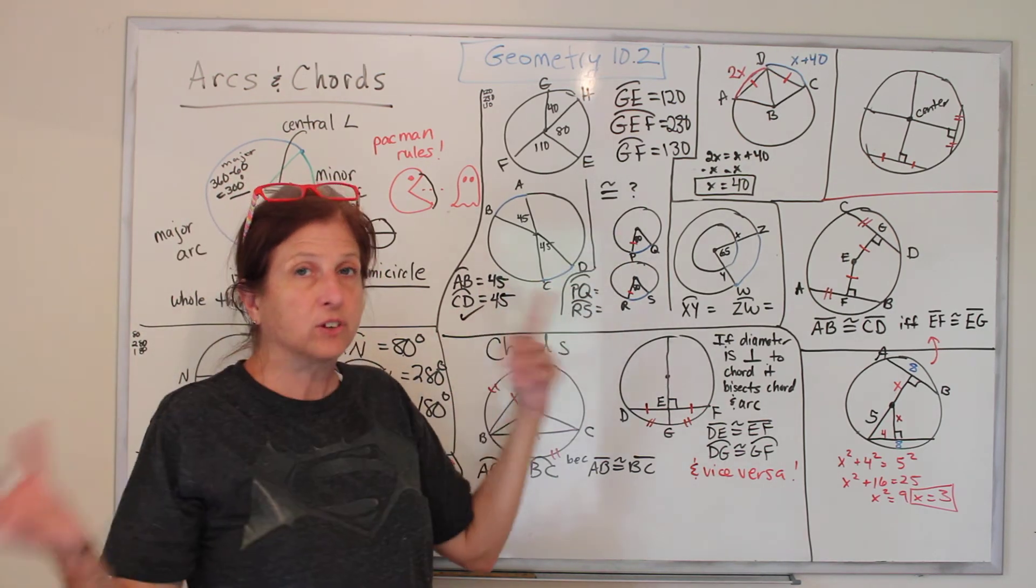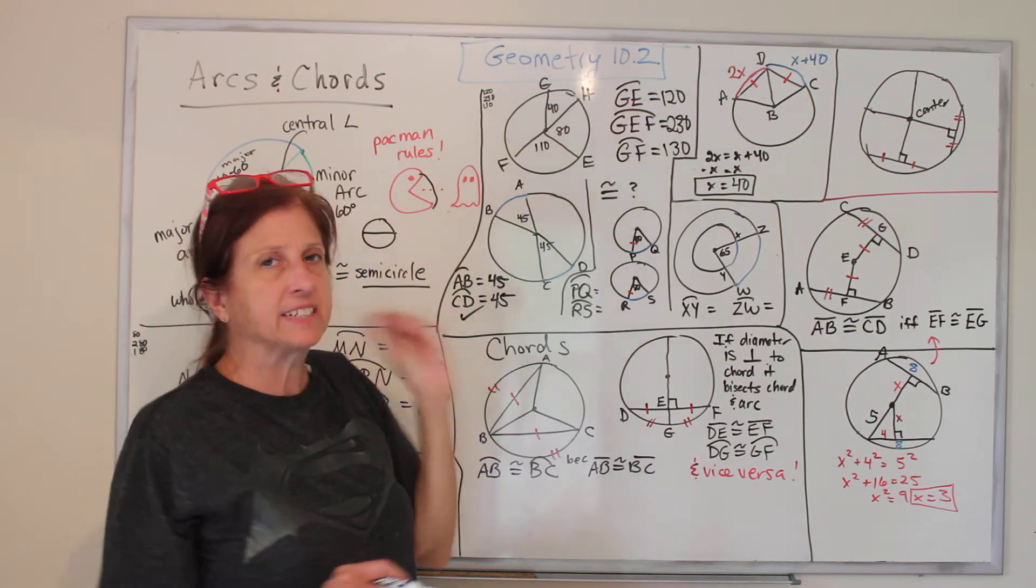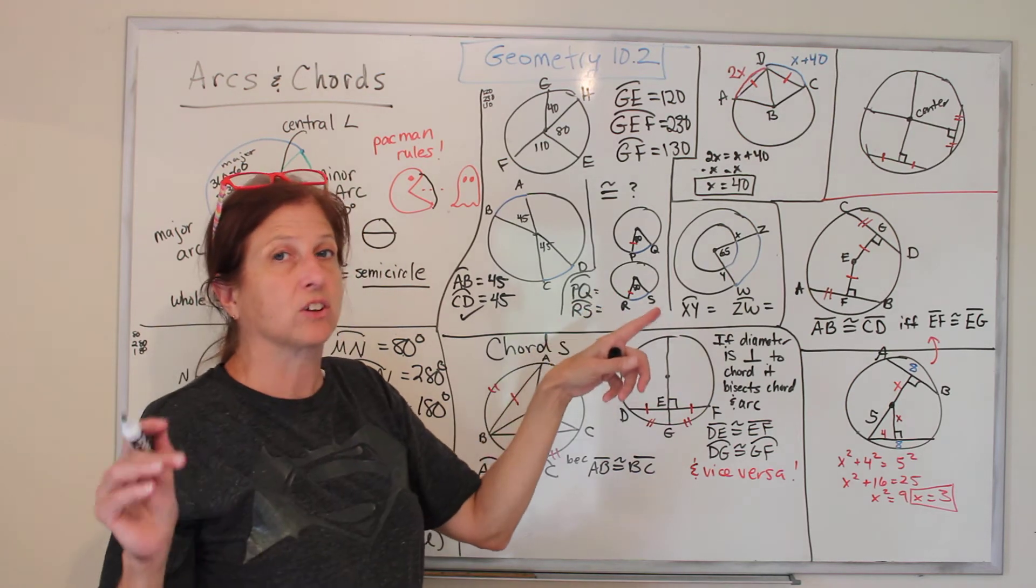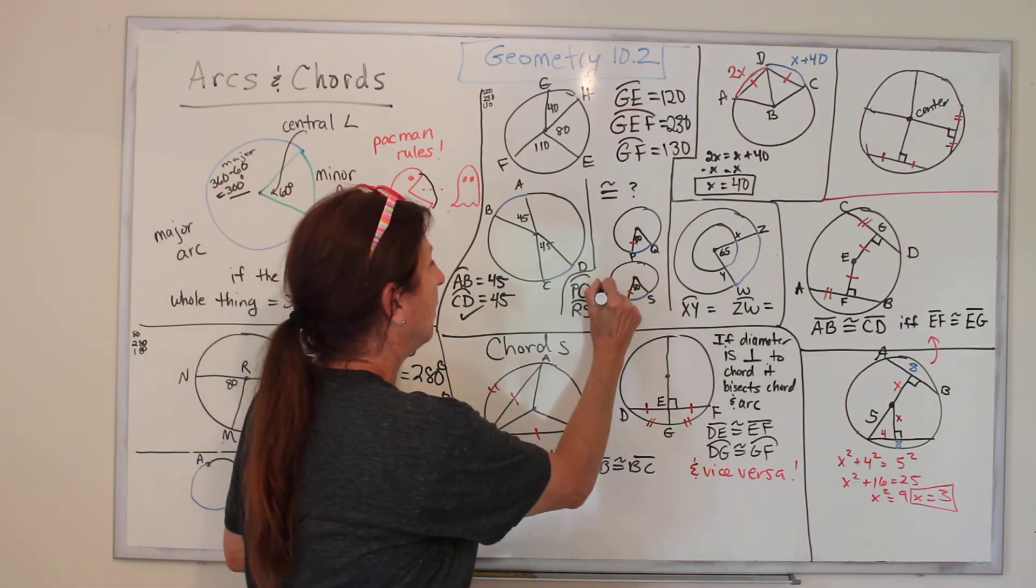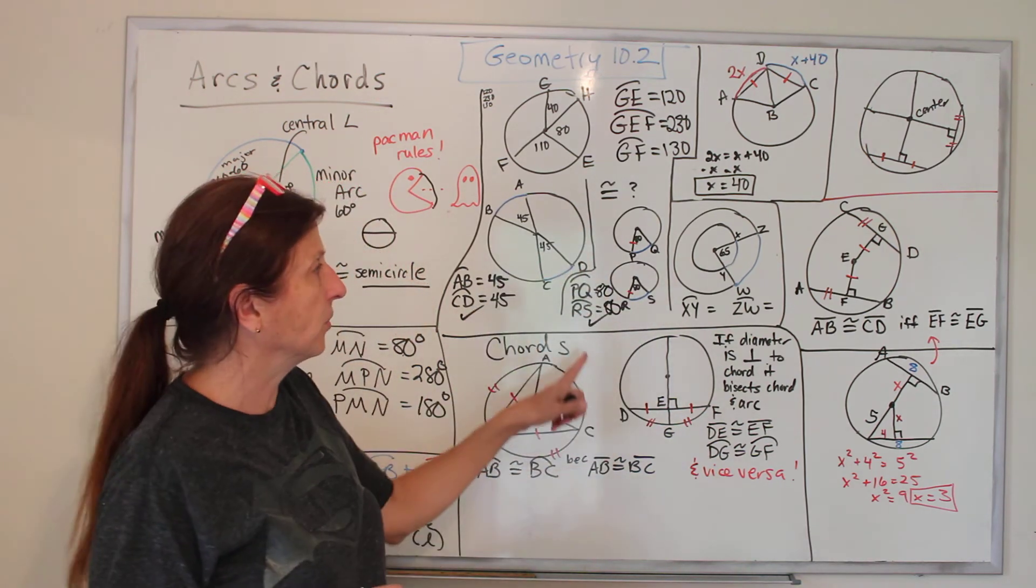Here we have two different circles. They're both 80 degrees, and we're told these radii have the same length. Remember when we learned that if circles have the same radius, they're congruent? So this is completely congruent, and they're both 80 degrees, and yes, those arcs are congruent.